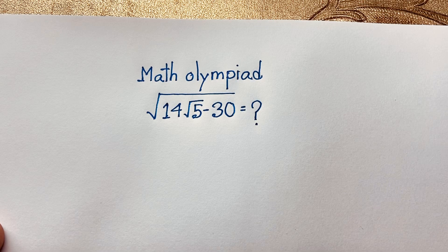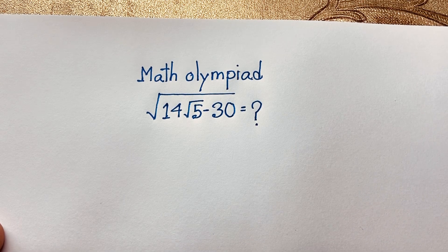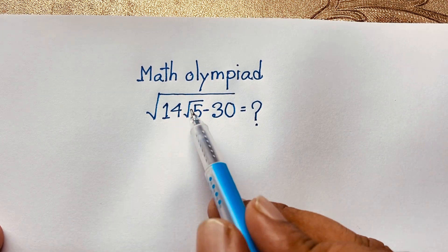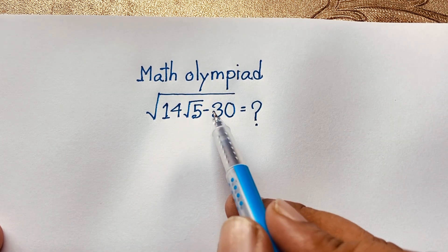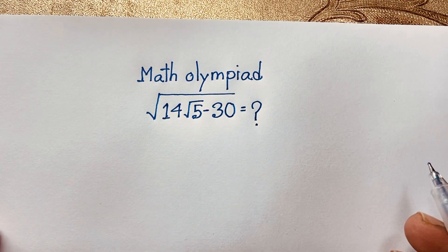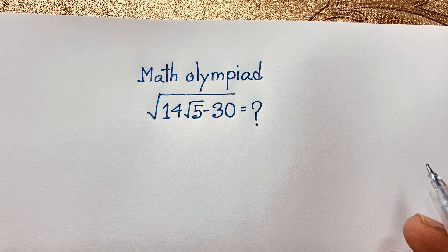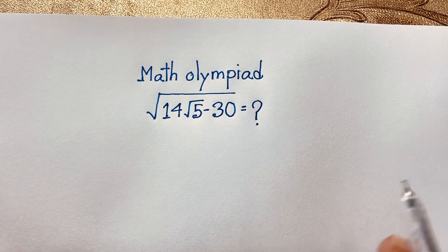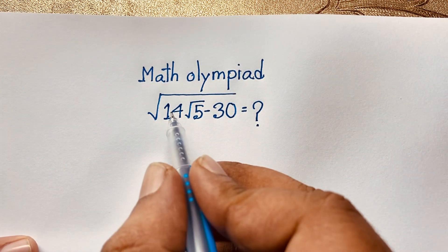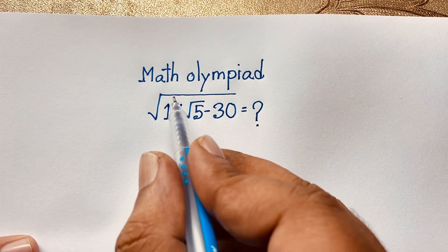Welcome to Rasha's classroom. Today we have a nice square root math problem: square root of (14 square root 5 minus 30) is equal to what? Let's simplify this math problem.